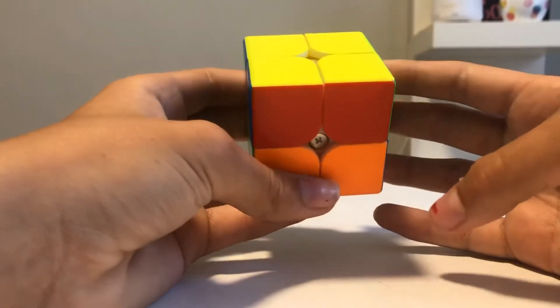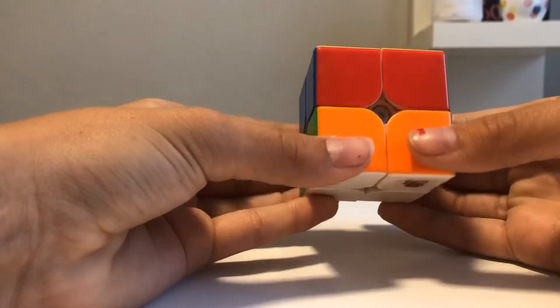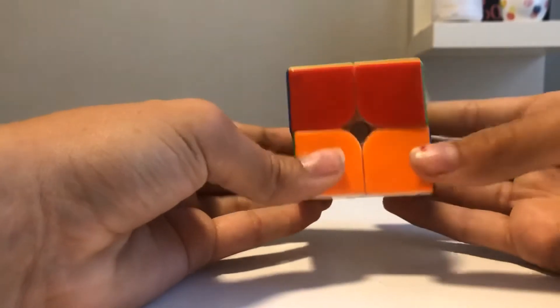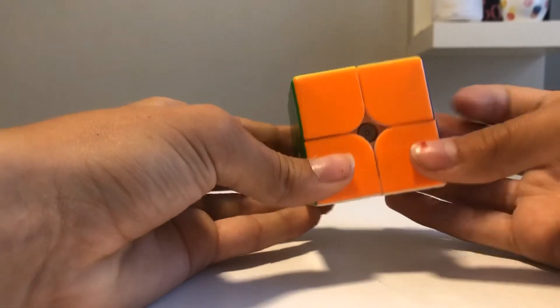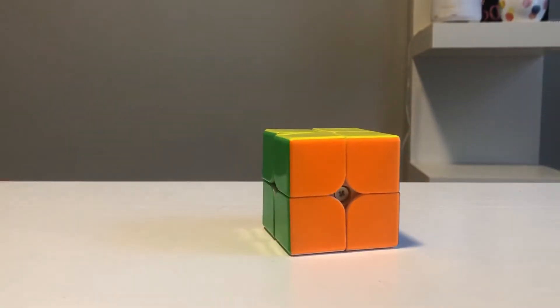And somehow I get an OLL and PLL skip, so this is my first full LL skip on 2x2, and I just do two moves to solve the top, and this was an insane lucky solve.